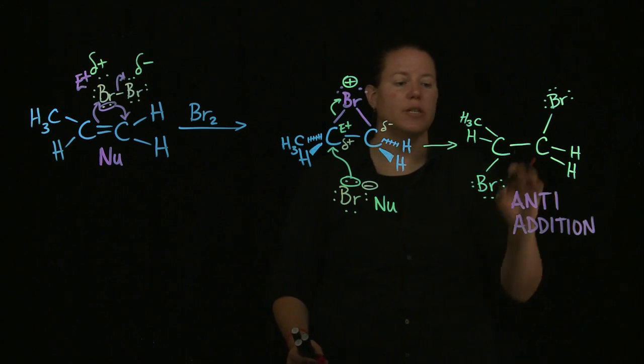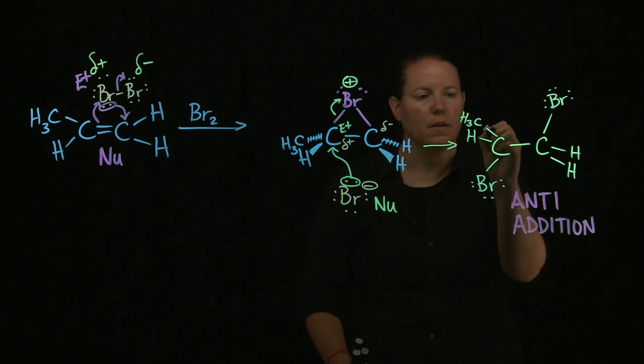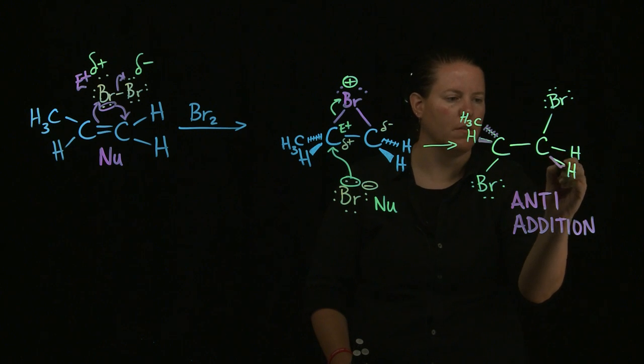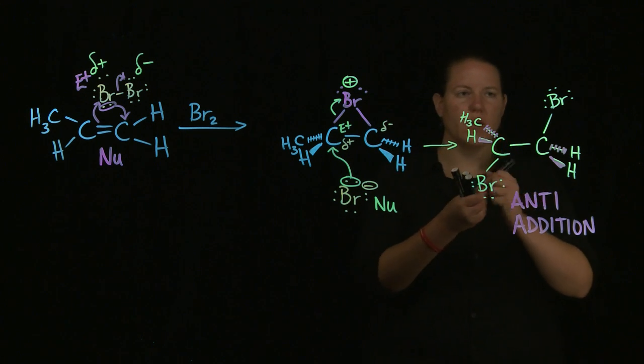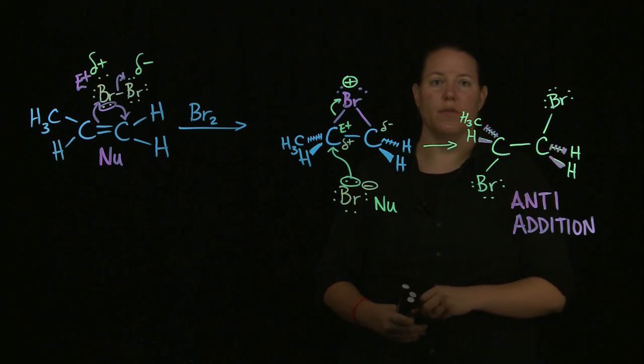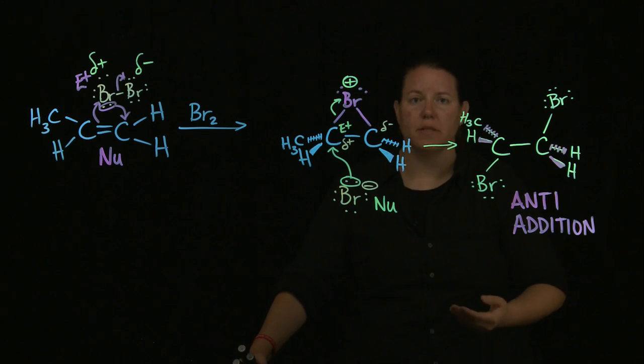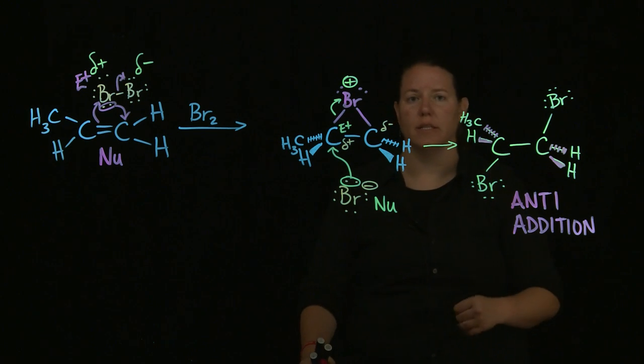And so that second nucleophilic attack is on the opposite side of the bridged halonium ion, leaving us with what we call an anti-addition. The anti-addition is of the Brs. If I wanted to keep my lovely stereochemistry here, I certainly could. But the Brs have to be opposite one another. And that's simply because of the bridged halonium ion. How many steps does this take? It takes two steps. Two nucleophilic attacks to get to the end.